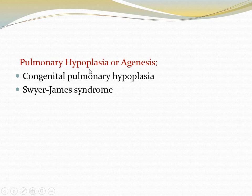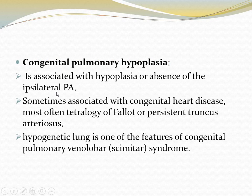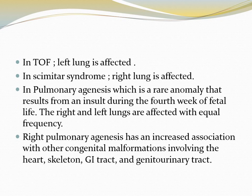Pulmonary hypoplasia or agenesis can be congenital, including congenital pulmonary hypoplasia or Scimitar syndrome. Congenital pulmonary hypoplasia is associated with hypoplasia or absence of the ipsilateral pulmonary artery, sometimes associated with congenital heart disease, most often tetralogy of Fallot or persistent truncus arteriosus. Hypogenetic lung is one of the features of congenital pulmonary venolobar Scimitar syndrome. In tetralogy of Fallot the left lung is affected; in Scimitar syndrome the right lung is affected. In pulmonary agenesis, a rare anomaly resulting from an insult during the fourth week of fetal life, the right and left lungs are affected with equal frequency. Right pulmonary agenesis has an increased association with other congenital malformations involving the heart, skeleton, GI tract, and genitourinary tract.